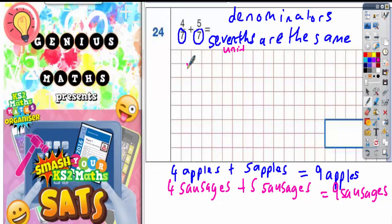So four sevenths and five sevenths is going to be nine sevenths because the unit is seven. So nine sevenths. Nine sevenths is the correct answer. Now that is an improper fraction because the number on the top is bigger.